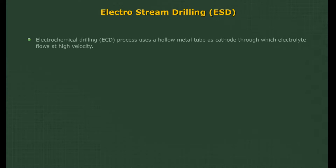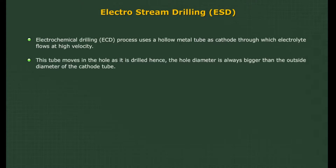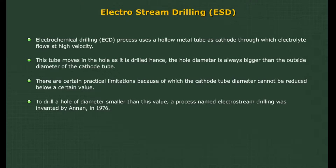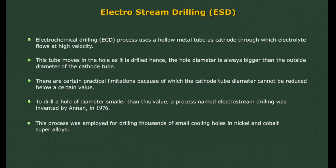ElectroStream Drilling. The Electrochemical Drilling (ECD) process uses a hollow metal tube as cathode through which electrolyte flows at high velocity. This tube moves in the hole as it is drilled, so the hole diameter is always bigger than the outside diameter of the cathode tube. There are practical limitations because of which the cathode tube diameter cannot be reduced below a certain value. To drill a hole smaller than this value, a process named ElectroStream Drilling was invented by Annan in 1976. This process was employed for drilling thousands of small cooling holes in nickel and cobalt superalloys.